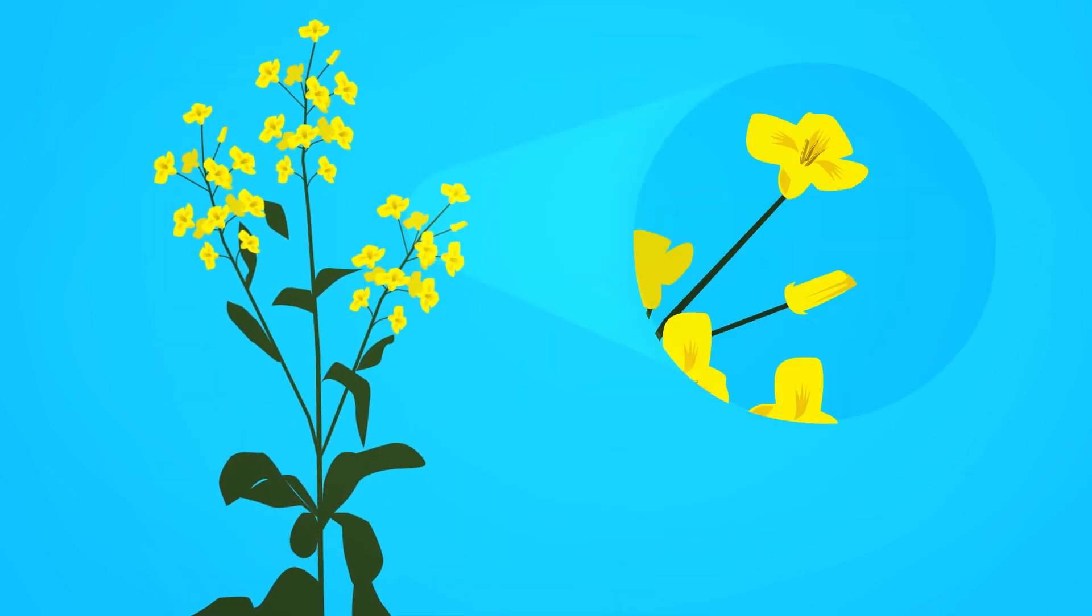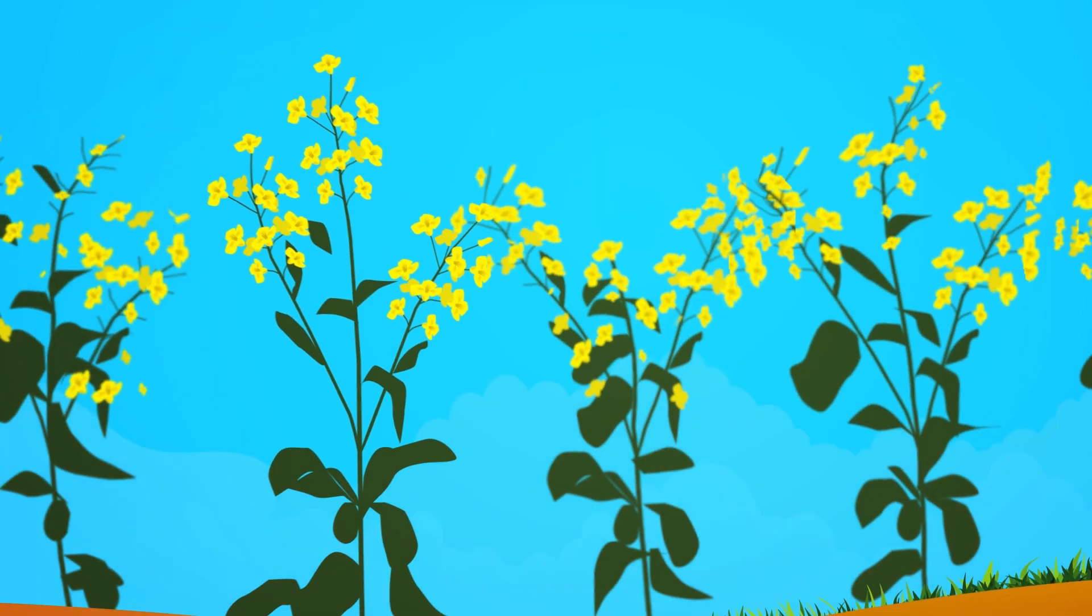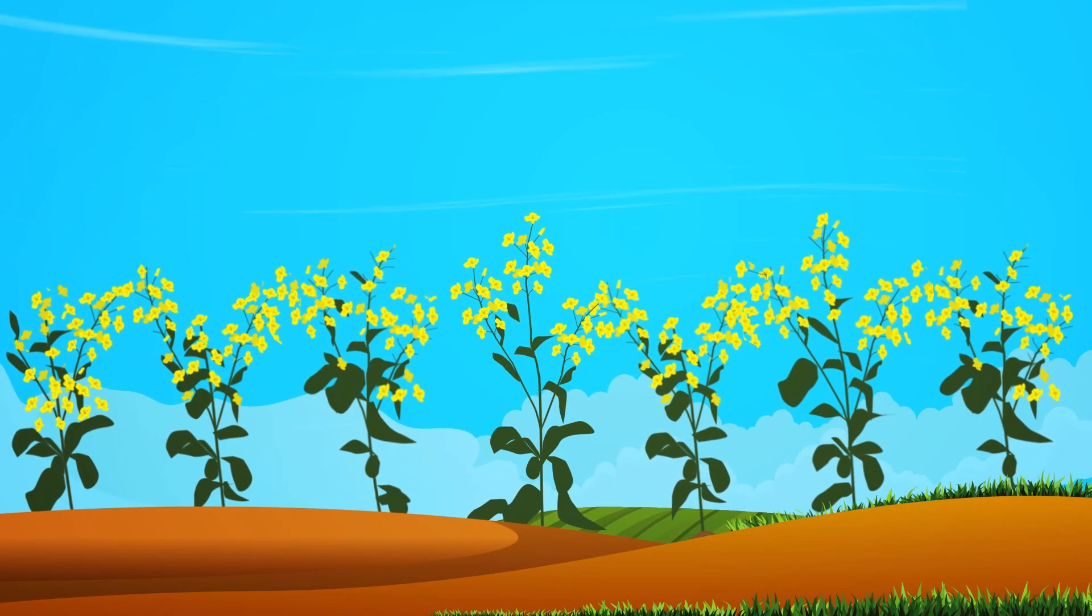Canola is easy to spot by its bright yellow flowers. These beautiful fields swaying in the wind have become a common sight on the prairie landscape.